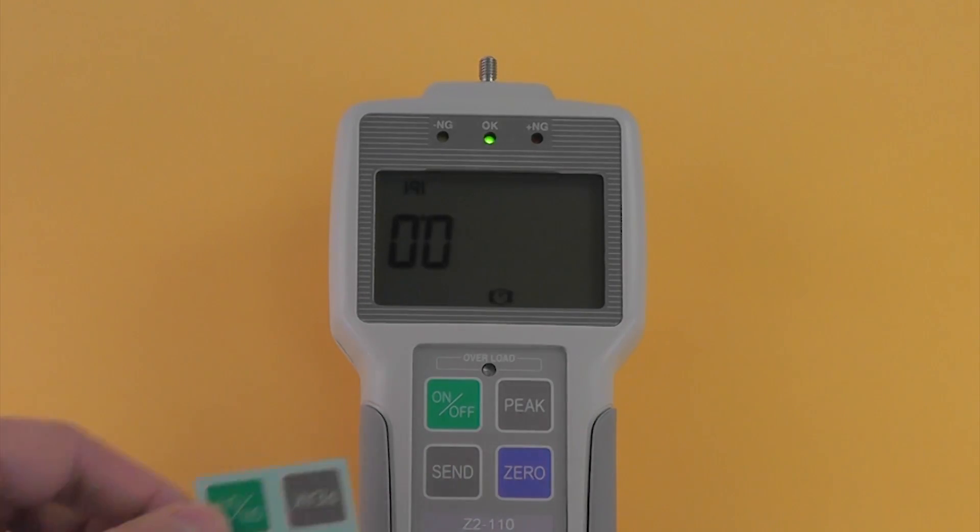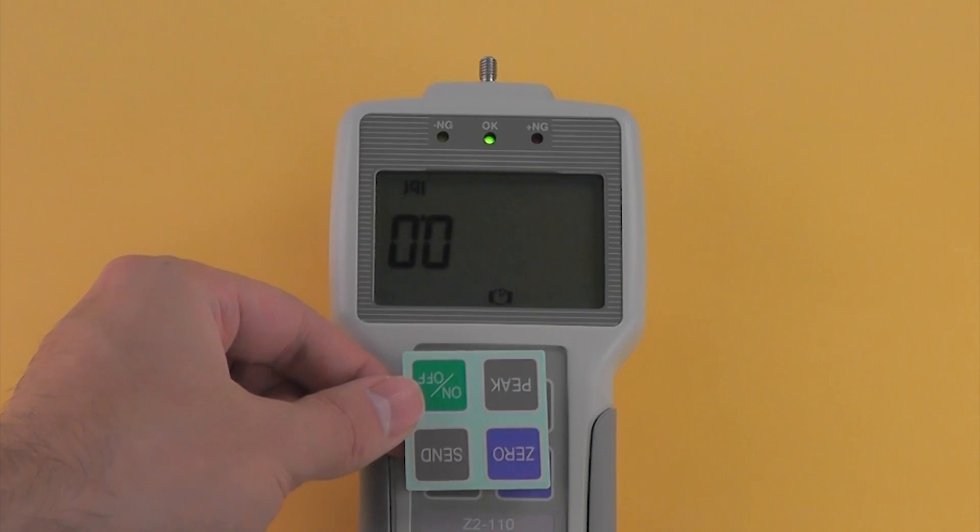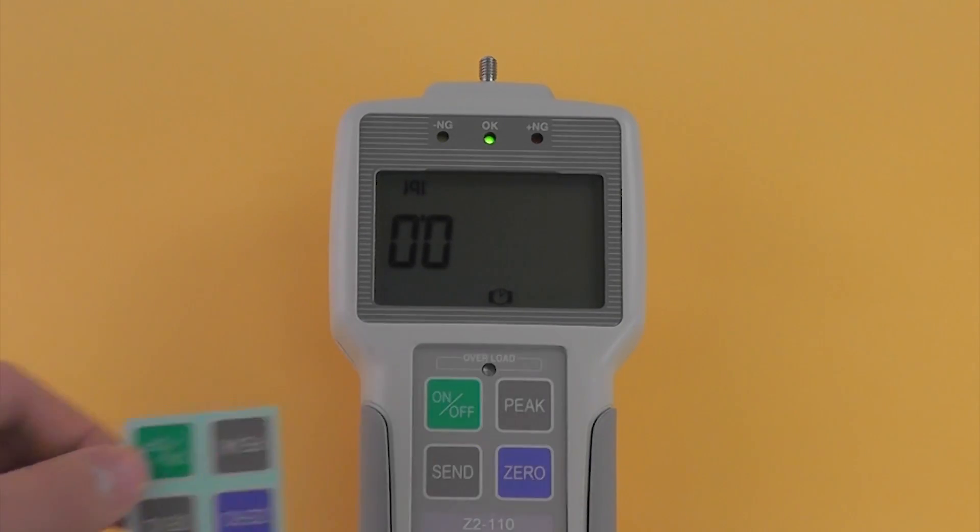For easier readability, the reverse display sticker can be attached to a gauge mounted to a test stand.